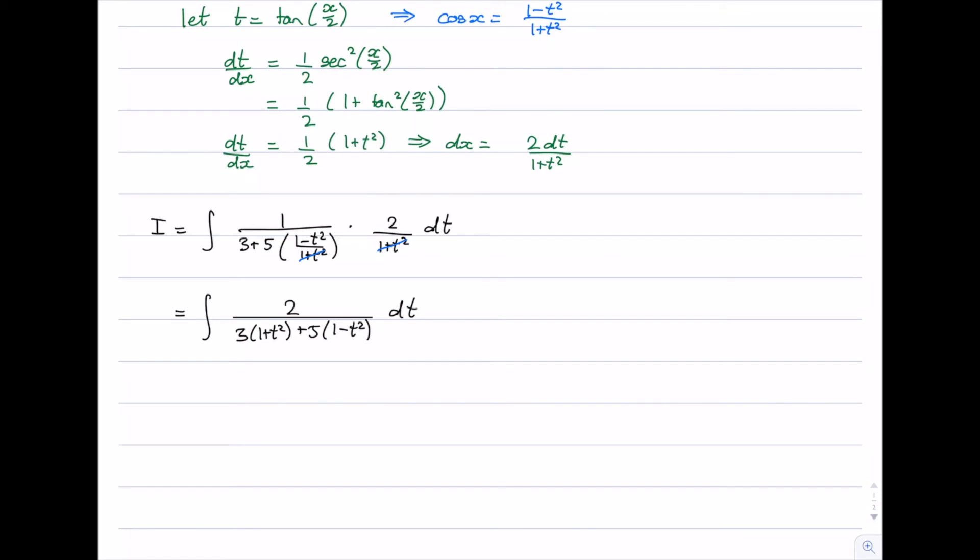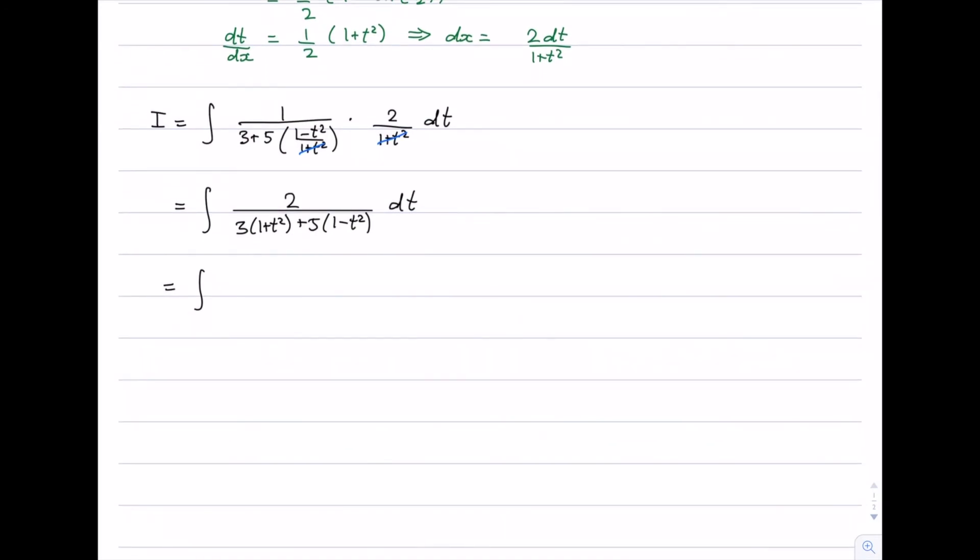Let's continue simplifying the denominator. We'd have 3 plus 5 which will give us 8. And then we have 3t squared minus 5t squared which will be minus 2t squared dt. We can divide top and bottom by 2 and we get 1 over 4 minus t squared.